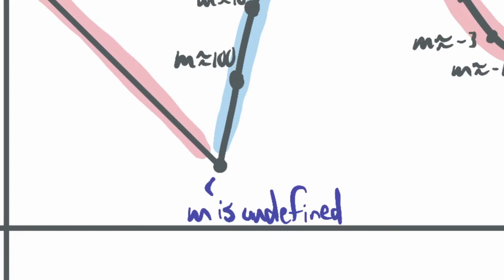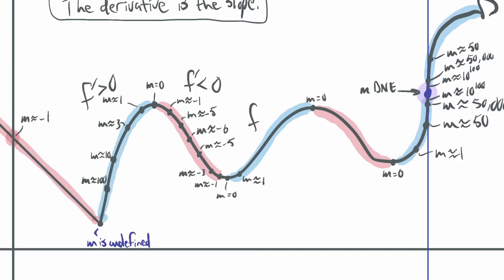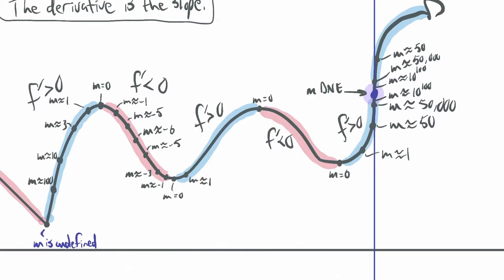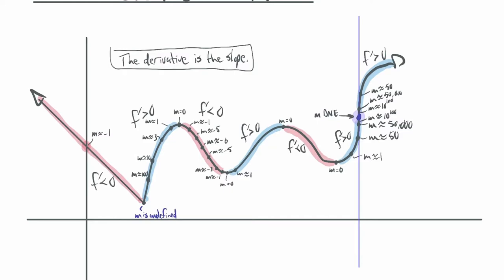So, one way you don't get a derivative is a corner; another way is a vertical tangent line. Whenever the graph is increasing, the derivative is positive. Whenever the graph is decreasing, the derivative is negative. We can examine the derivative to tell us about the graph, or examine the graph to tell us about the derivative. There's a correlation — if we have one, we implicitly have information about the other. It just matters whether we know how to tease out that information.